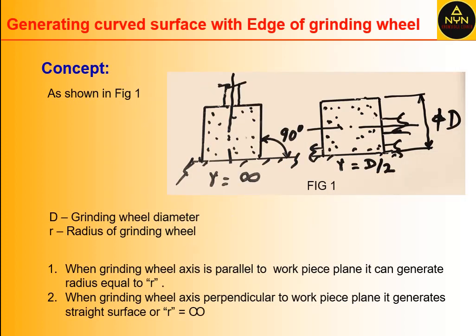As shown in Figure 1, D is the grinding wheel diameter and R is the radius of the grinding wheel (D/2). When the grinding wheel axis is parallel to the workpiece, it can generate a radius equal to R. When the grinding wheel axis is perpendicular to the workpiece plane, it generates a straight surface or R equal to infinite.